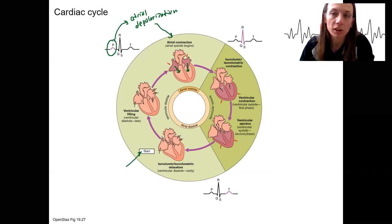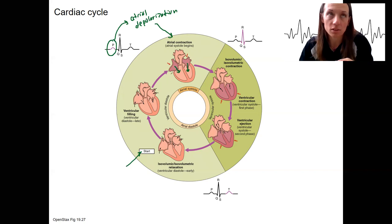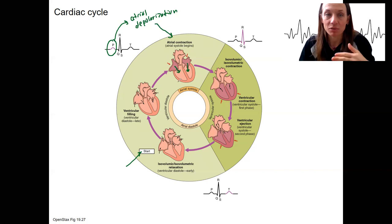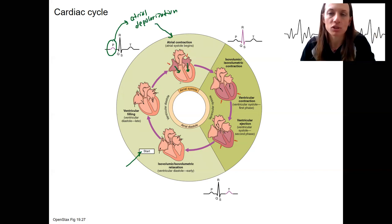When the blood is in the ventricles, it's going to push those AV valves closed again, and they're going to be kept from flapping the other direction by the chordae tendineae. So here is atrial systole.